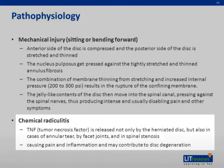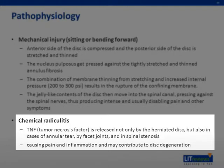In terms of chemical radiculitis, tumor necrosis factor is released not only by the herniated disc, but also in cases of annular tear by facet joints and in spinal stenosis. This causes pain and inflammation, and may contribute to disc degeneration.